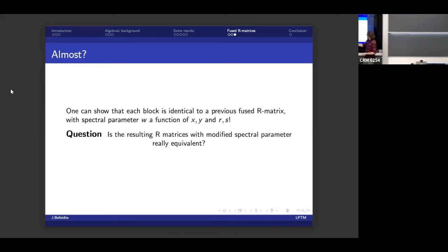It's very easy to show that all of these blocks are equivalent to one of the R matrices that are just simple fused R matrices. However, the resulting spectral parameter, w, of the new of each of these blocks, it's not going to be the same that I started with. It's going to be some complicated function of the two spectral parameters of my original fused R matrices, and also of the two widths, or the two spins, r and s.